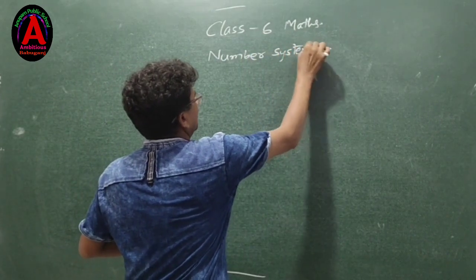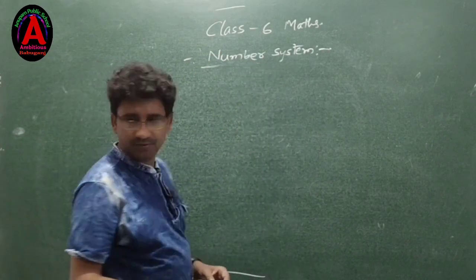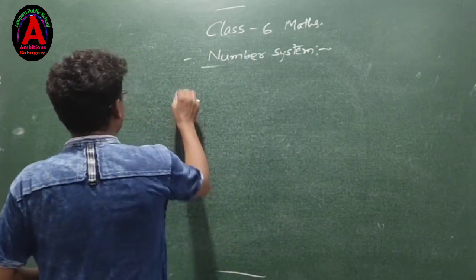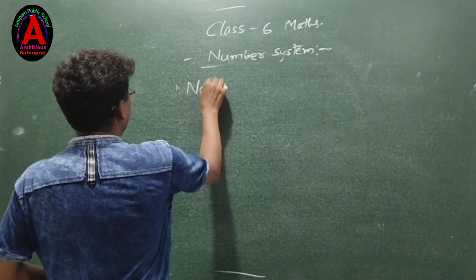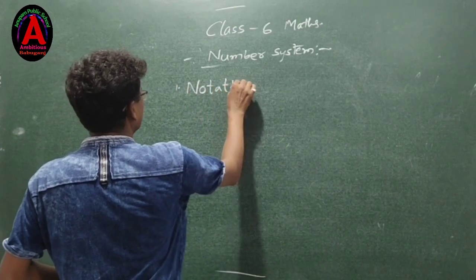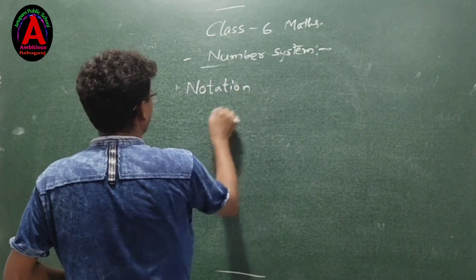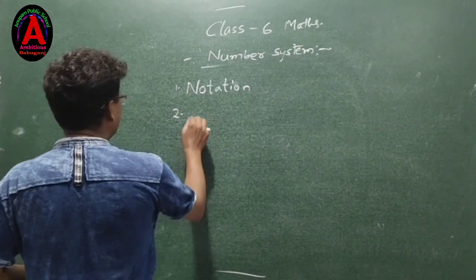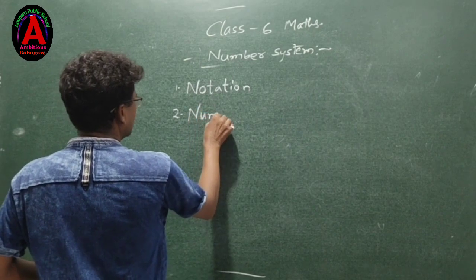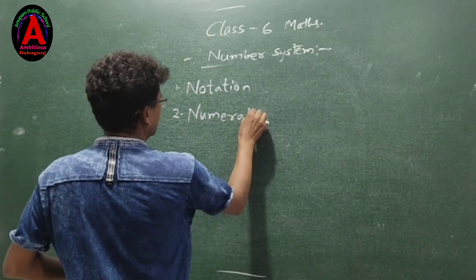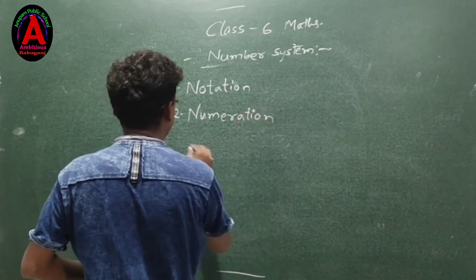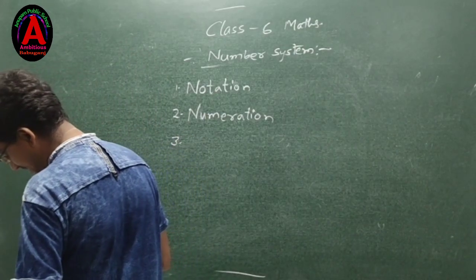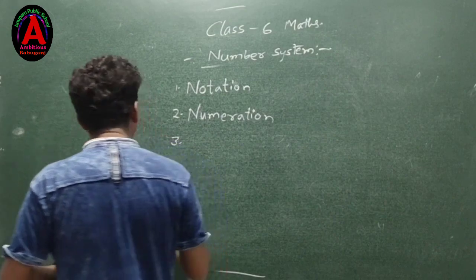In Number System we will read today: number one is Notation, number two is Numeration, and number three is Numeral.